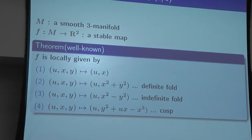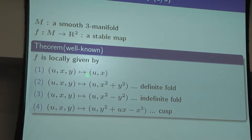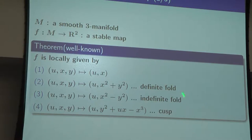There is a classification of stable maps. From now I assume M is a three-dimensional manifold and N is the Euclidean plane. There are four cases: regular points (just projection), definite fold, indefinite fold, and cusp. In dimension three, the number of cusps is always even, and by a smooth move of the map we can always eliminate them. So only definite folds and indefinite folds appear in my talk.